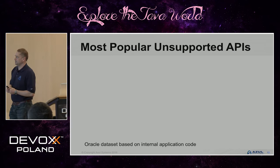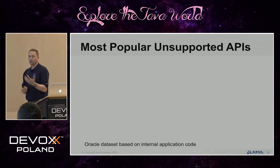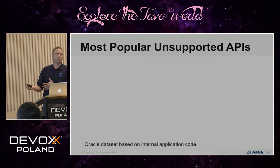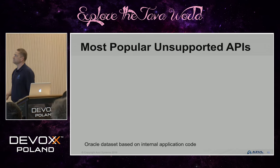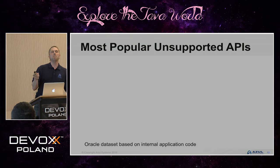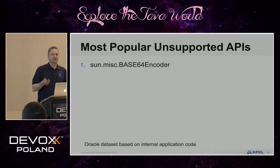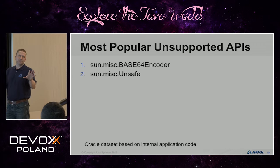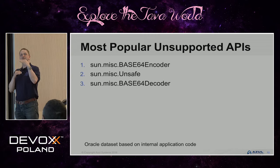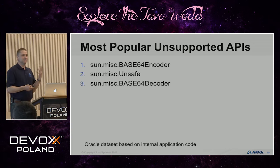Oracle did a big survey — they took source code like Fusion Middleware and Java itself and looked at which internal APIs they'd used themselves. Anyone want to guess the most popular unsupported API Oracle had used? It was Base64 Encoder. Number two was Unsafe. And number three? The Decoder. Which is kind of weird — they must have encoded a lot more data than they decoded. But this shows there was a lot of use of these internal APIs, so something had to be done about that.